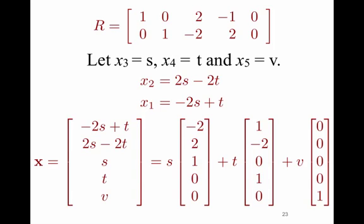Breaking that up, I write x in all its component parts. X1 is minus 2s plus t, x2 is 2s minus 2t, x3 was chosen arbitrarily to be s, x4 arbitrarily to be t, and x5 arbitrarily to be v. Separating those into s times some vector, t times some vector, and v times some vector gives what you see on the right-hand side. Those three vectors form a basis for every solution to the homogeneous system of equations, and therefore form a basis for the null space.